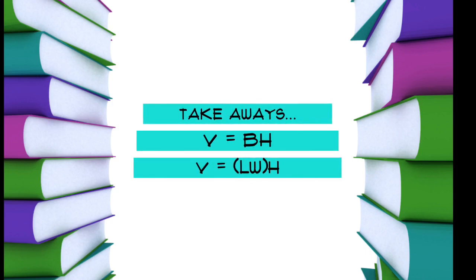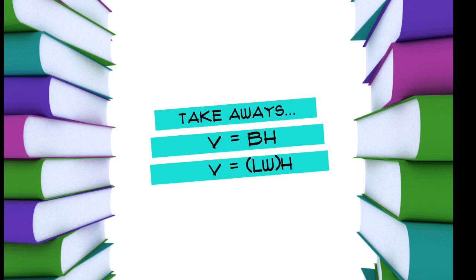So today's takeaway. Volume for a rectangular prism is capital B times H.